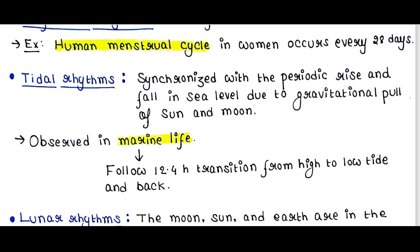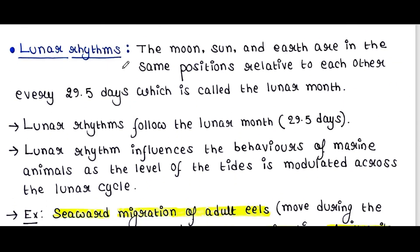Next is lunar rhythms. The moon, sun, and earth are in the same positions relative to each other every 29.5 days, which is called the lunar month. Lunar rhythms follow this lunar month of 29.5 days.